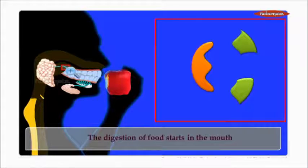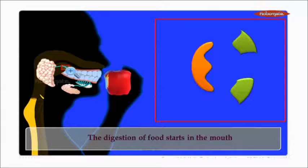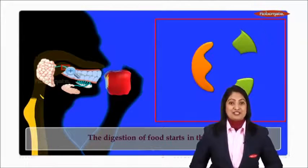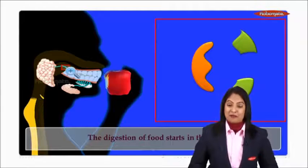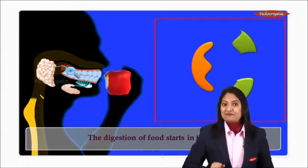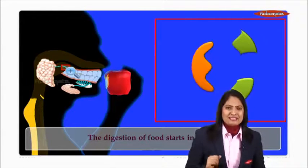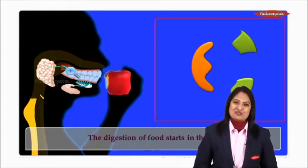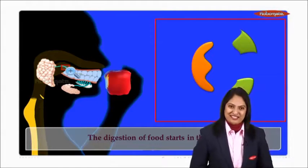This tells us that food is partly digested in the mouth — the process of digestion begins in our mouth. This is a very important 'give reason' question worth two marks which can come in our exam paper. With this information we end this informative module on the process of digestion.